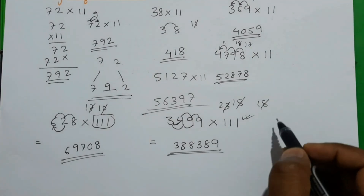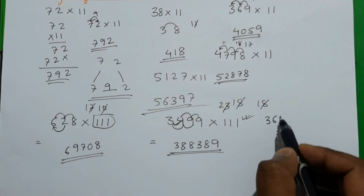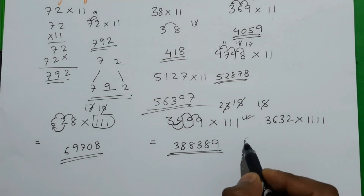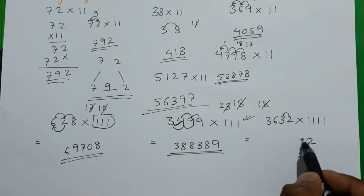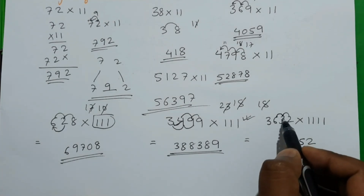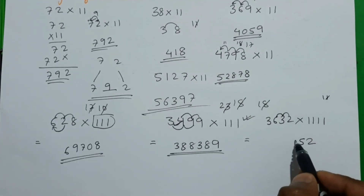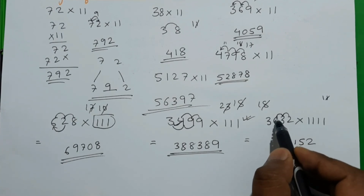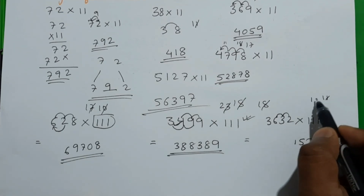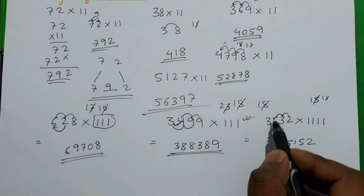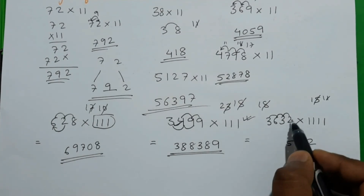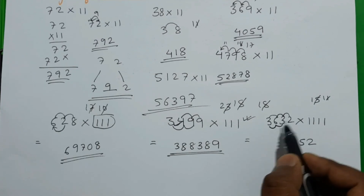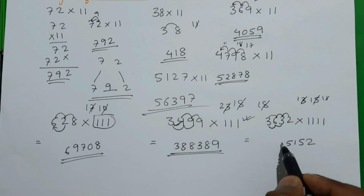Let's see an example: 3632 × 1111. Write 2 first. Then 2 plus 3 is 5. Then adding three digits: 2 plus 3 plus 6 is 11 — write 1, carry 1. Then adding all four digits: 3 plus 2 plus 6 plus 3 is 14, plus 1 is 15 — write 5, carry 1. Then shift: 3 plus 6 plus 3 is 12, plus 1 is 13 — write 3, carry 1.